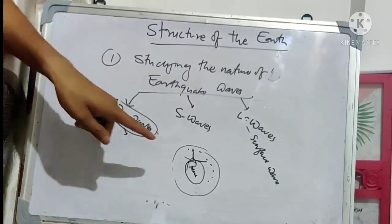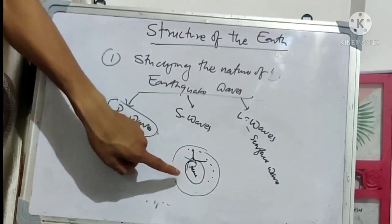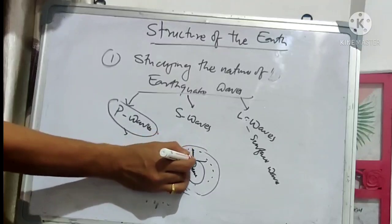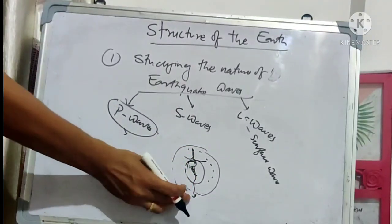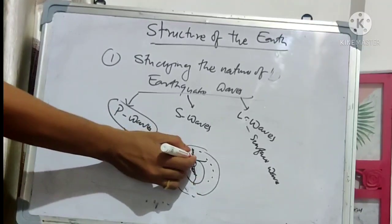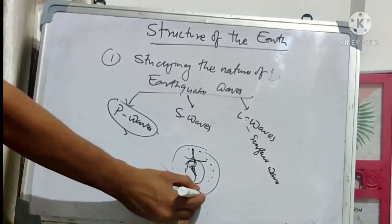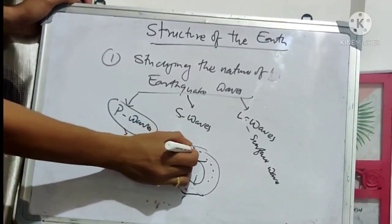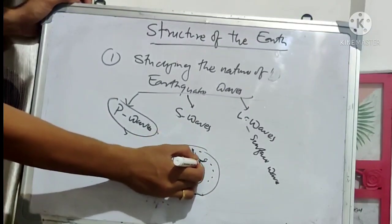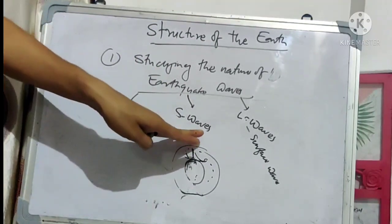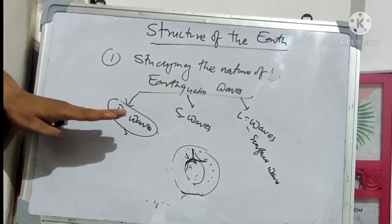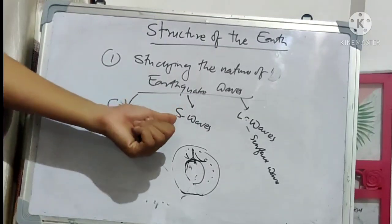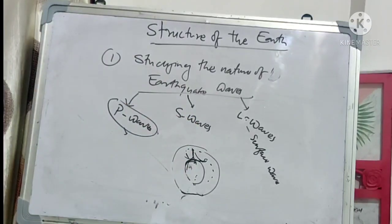In the antipodal region, we do not feel the impact of S waves, whereas P waves can still penetrate through. S waves travel only through the solid medium and get absorbed in liquid mediums. The speed of the S wave is comparatively less — approximately 5 to 8 kilometers per second.